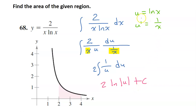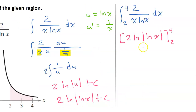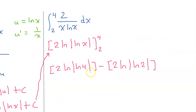But u is the natural log of x, so we get 2 times the natural log of the natural log of x — that's so weird — plus c. Let's put the limits of integration back in so we can find the area from 2 to 4. So we need to take our anti-derivative and evaluate it from 2 to 4 — in other words, take the value at 4 and subtract the value at 2. This is a valid answer, but this is not what you would see on a multiple choice question, so let's keep going.